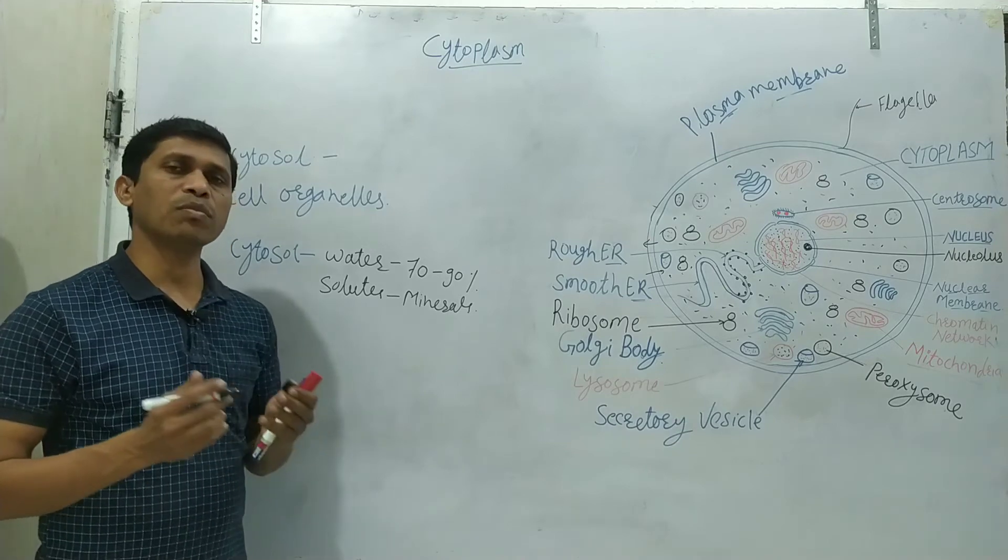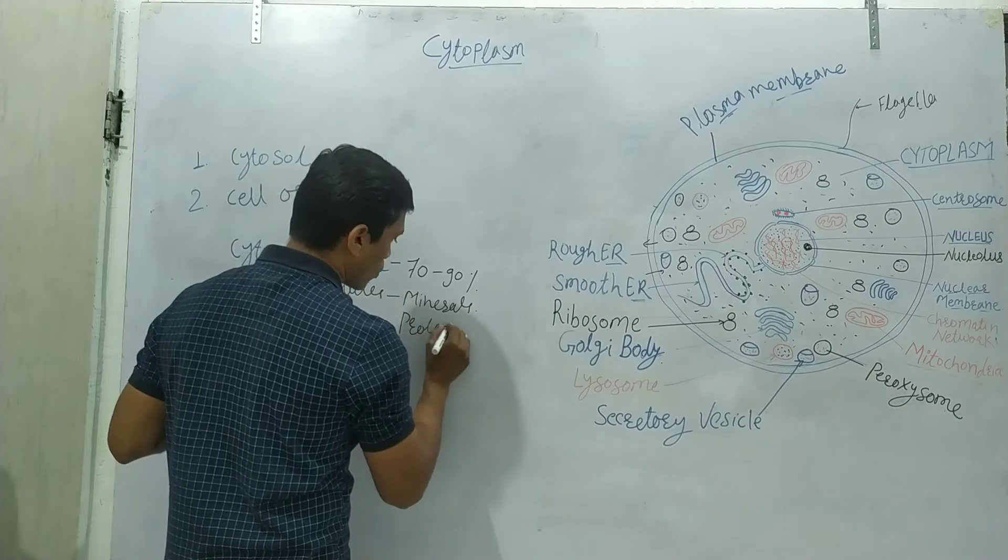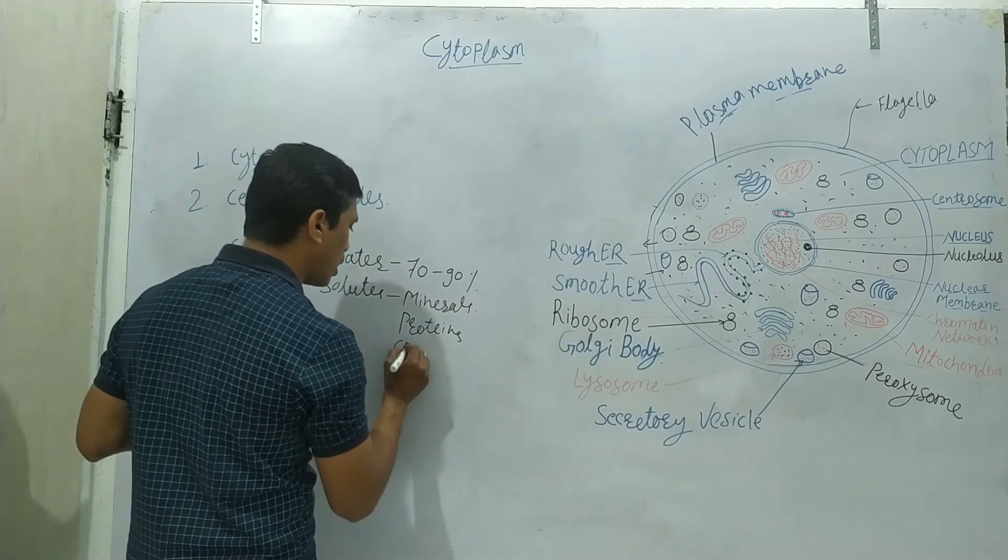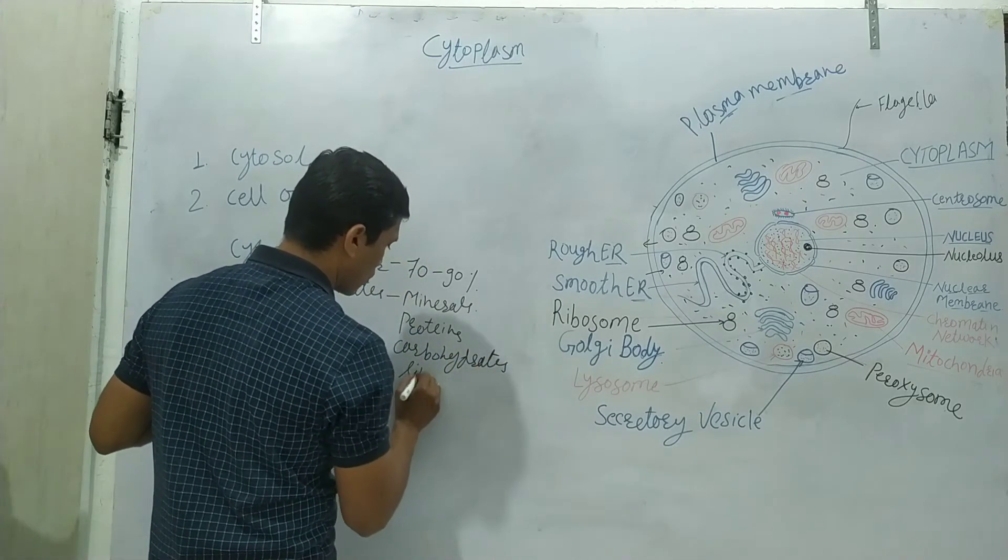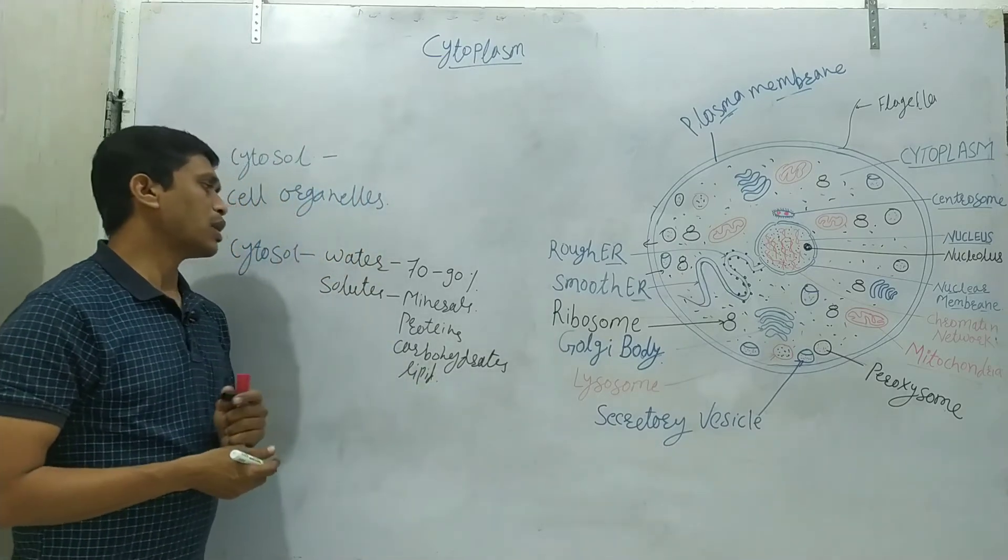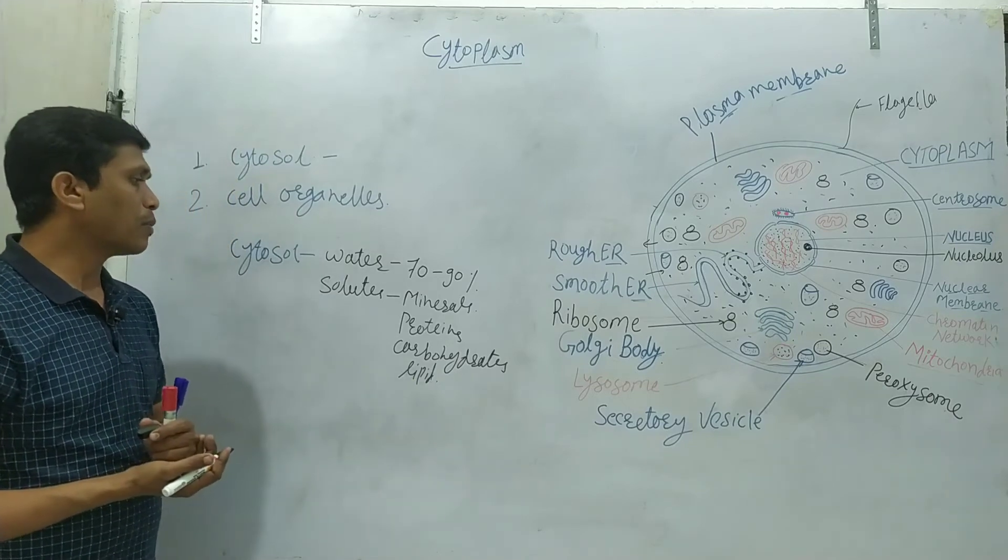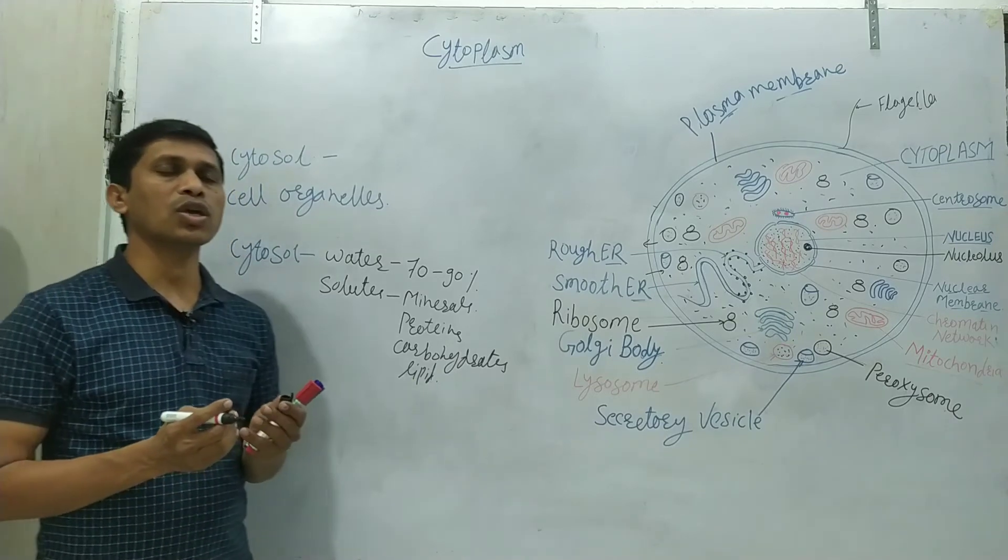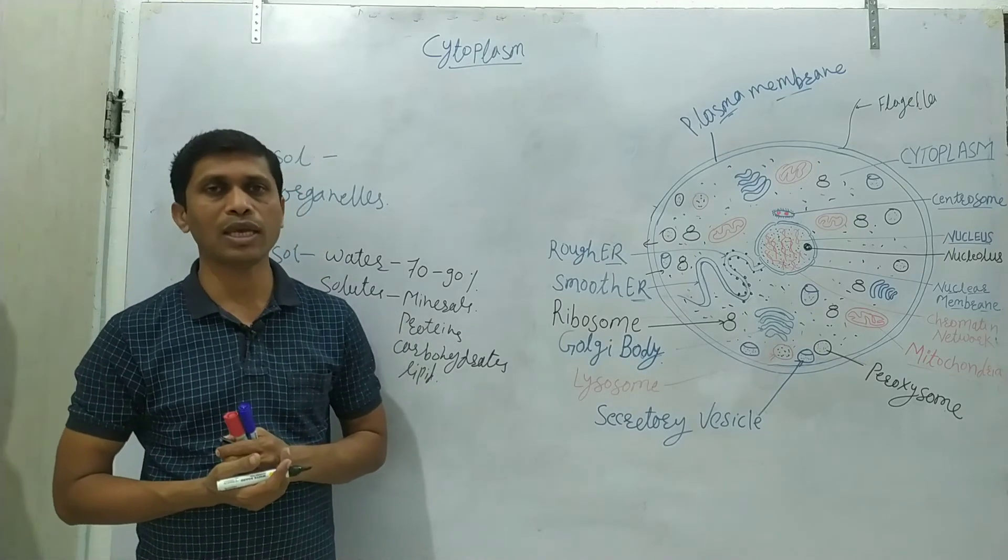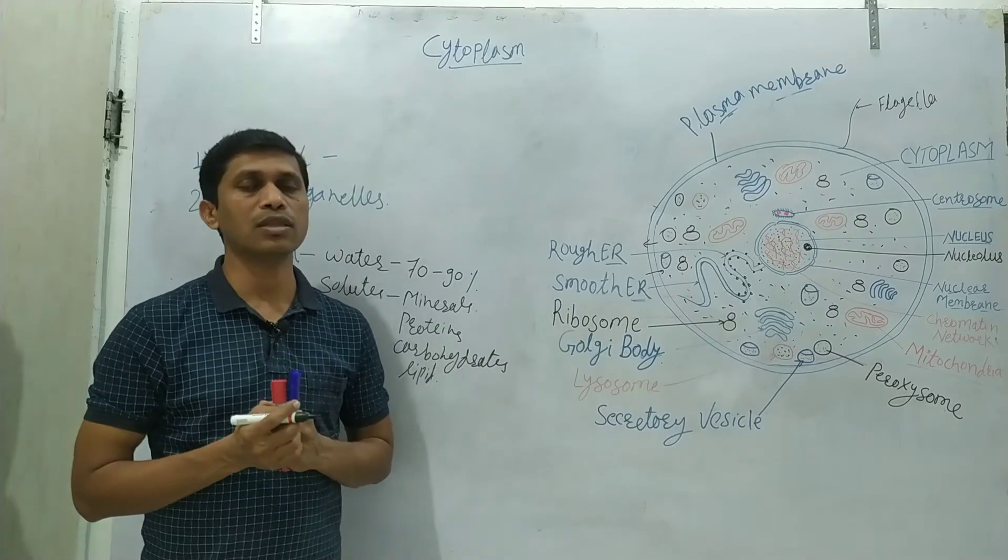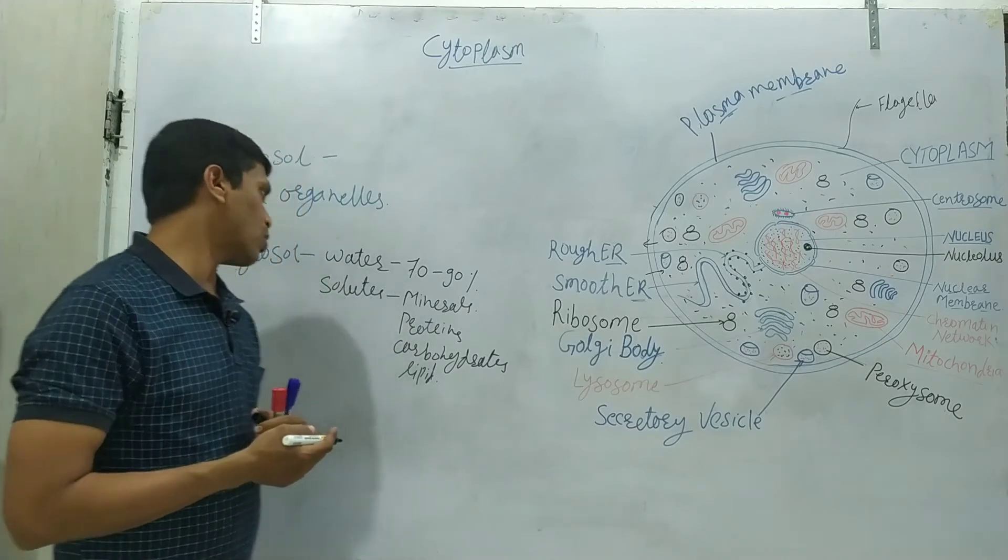In solid form, minerals are present, as well as proteins. Protein is also there, carbohydrates and lipids. These components are present in the cytosol, and also some enzymes are present. In this cytosol, there are also some molecules which are energy storage sources present, in the sense that in droplet form, glycogen fibers are present, which is the energy source.